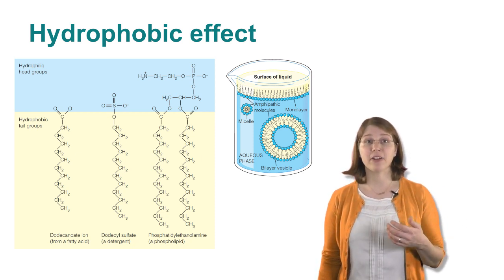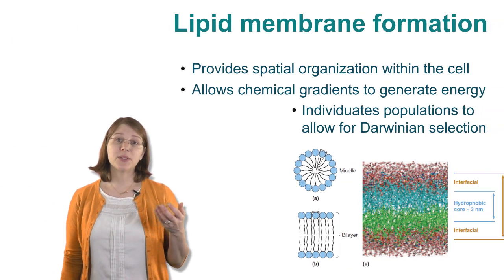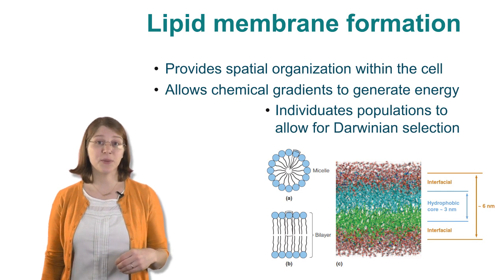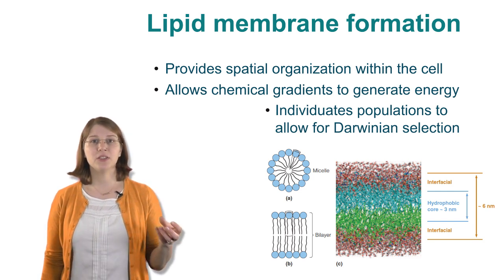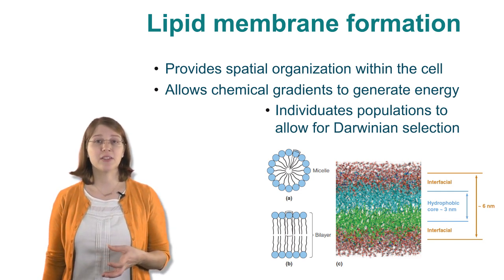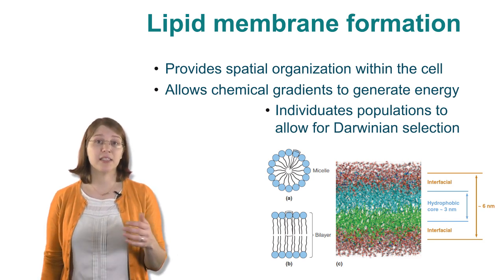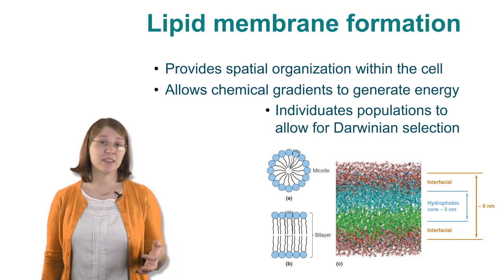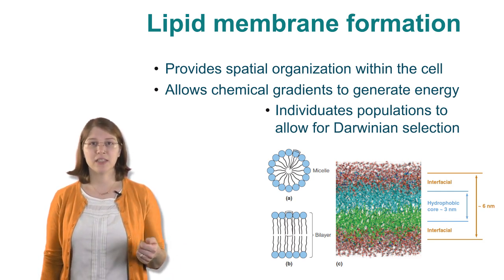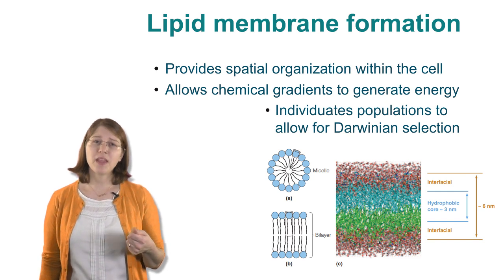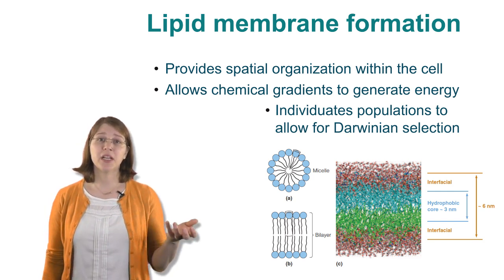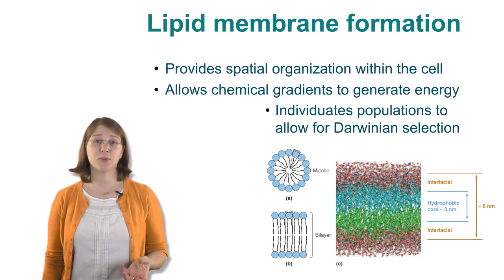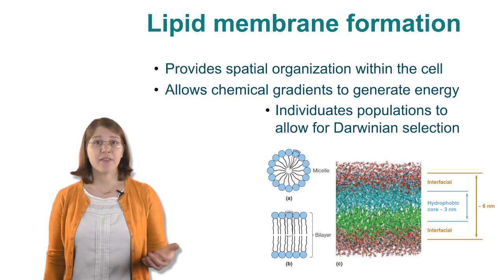The hydrophobic effect causes the aggregation of lipid membranes. A lipid membrane serves as a hydrophobic barrier between the environment and the inside of the cell. It can also serve to organize organelles within the cell — things like the nuclear membrane separate the DNA inside the nucleus from the cytosol, which can contain degrading or toxic molecules. This can also allow for Darwinian selection where a single individual can outperform its peers within a population to survive and reproduce.